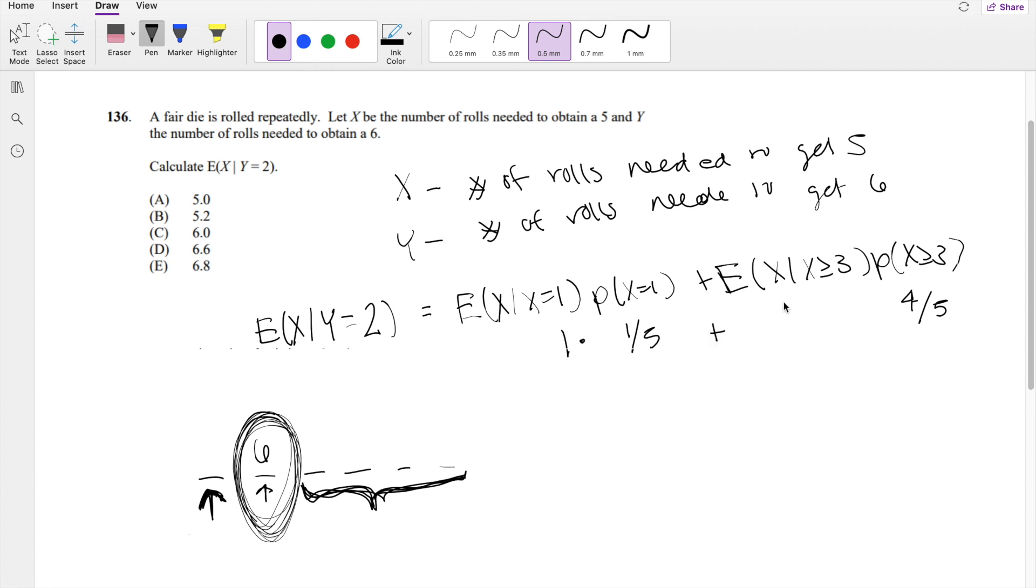And then the second part here, this one's a little bit trickier. What is the expected value of number of rolls needed to get a 5, given the number of rolls is greater than 3? So then that means, because there are two things that are memoryless, for discrete functions it's geometric, and for non-discrete functions, like continuous functions, it's going to be exponential.